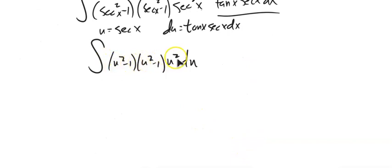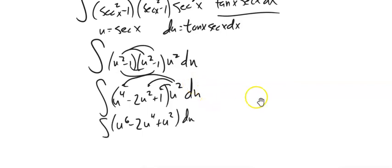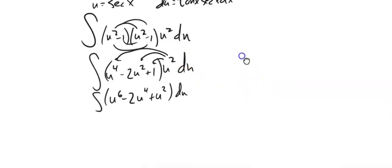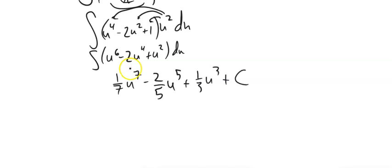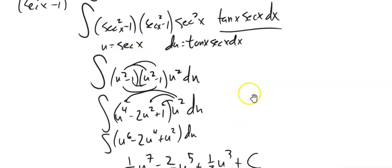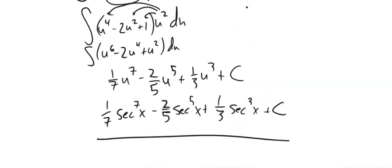Expanding: (u² − 1)² = u⁴ − 2u² + 1. Distributing u²: u⁶ − 2u⁴ + u². Integrating: (1/7)u⁷ − (2/5)u⁵ + (1/3)u³ + C. Since u = sec x: (1/7)sec⁷x − (2/5)sec⁵x + (1/3)sec³x + C.